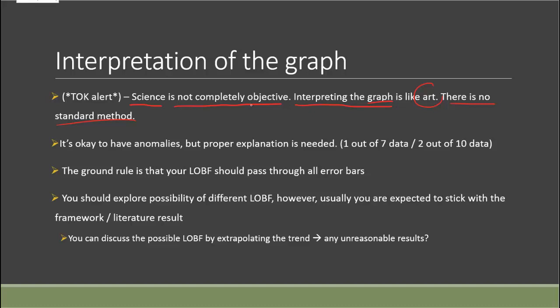Before you draw your line of best fit, you may find out that there might be some anomalies. And it is actually fine to have that in your physics IA. However, if you have that and if you want to declare there is an anomaly, then you should have a proper explanation for it. As for the quantity, I would say if you have one out of seven data sets, it is acceptable. And if you have two out of ten data sets, it is okay. But if you have more than that, I guess you may want to revisit your methodology or revisit at least that particular data point. And then hopefully, maybe you can try to redo and repeat more trials on that point and see whether you can find something different.